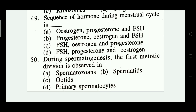Last question of the day: during spermatogenesis, the first meiotic division is observed in — spermatids, ootids, primary spermatocytes. Which one is right? Option D is the correct answer. I hope this video will help students a lot during their CHSE 2021 exam while they appear for the Zoology paper. Thanks for watching. God bless you. Bye-bye.